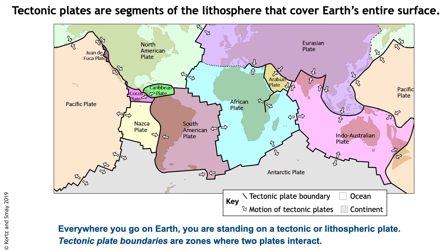Another important aspect of understanding tectonic plates is that they are segments of the lithosphere that cover the entire surface of Earth. Everywhere you go on Earth, you're standing on a tectonic plate. There are no gaps between tectonic plates, and the boundaries are the areas where two tectonic plates are interacting.